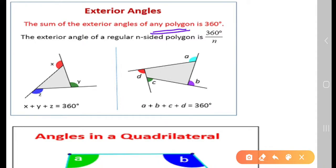Any polygon means it can be a triangle, quadrilateral, pentagon, octagon, whatever it may be. Any regular polygon, any polygons, the exterior angle will be 360 degrees.